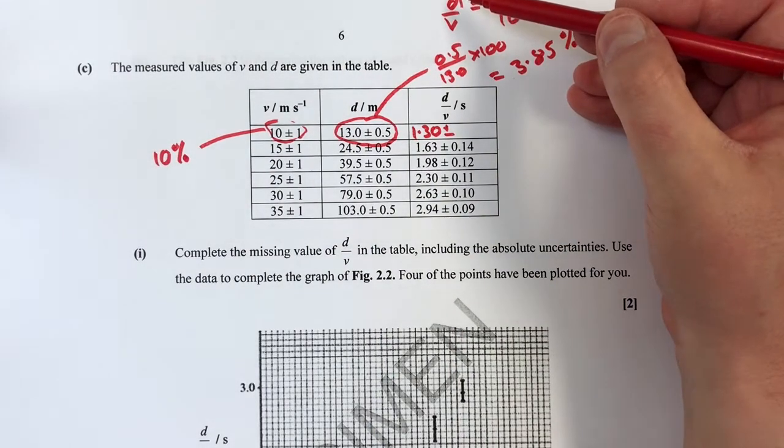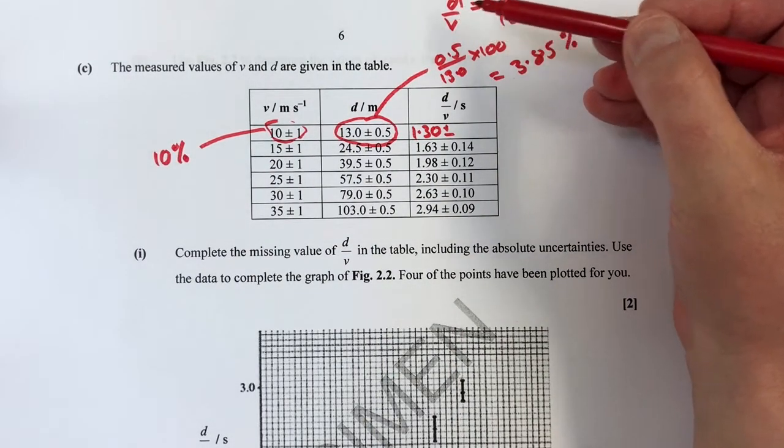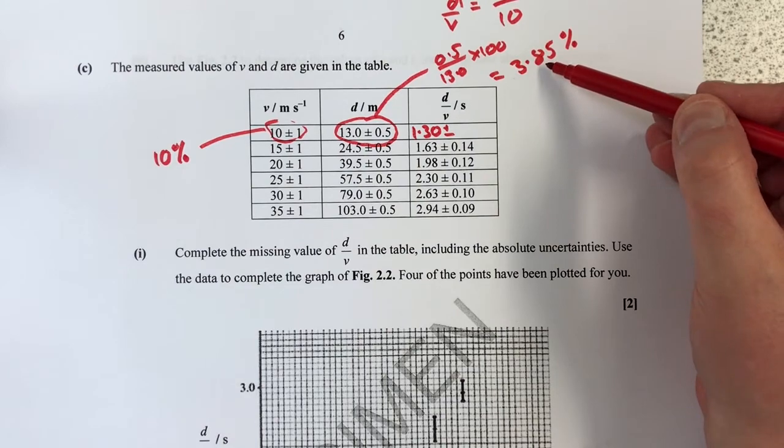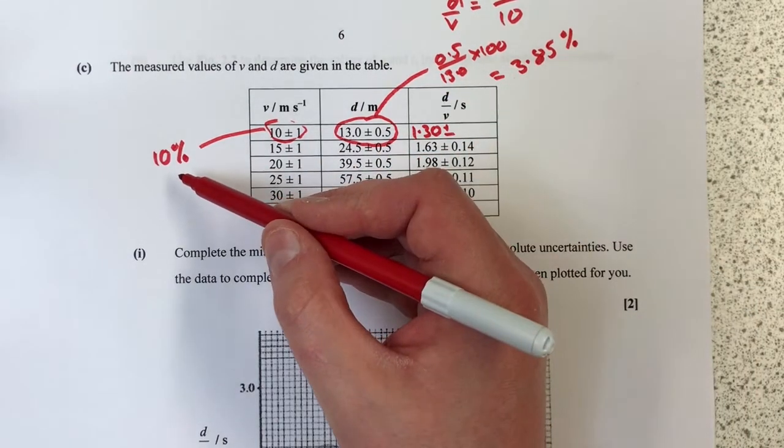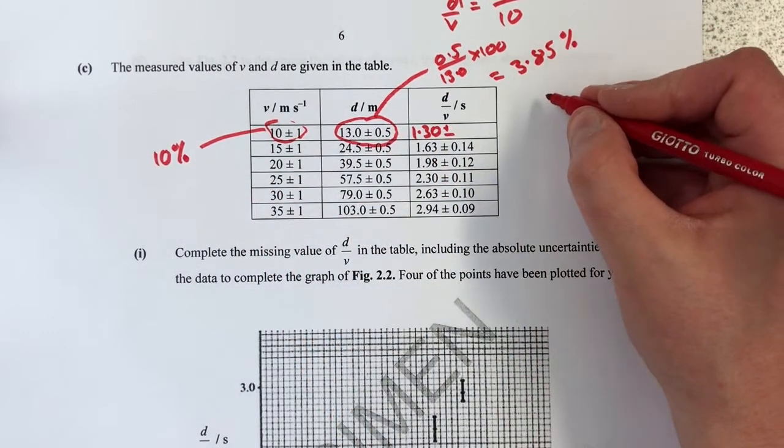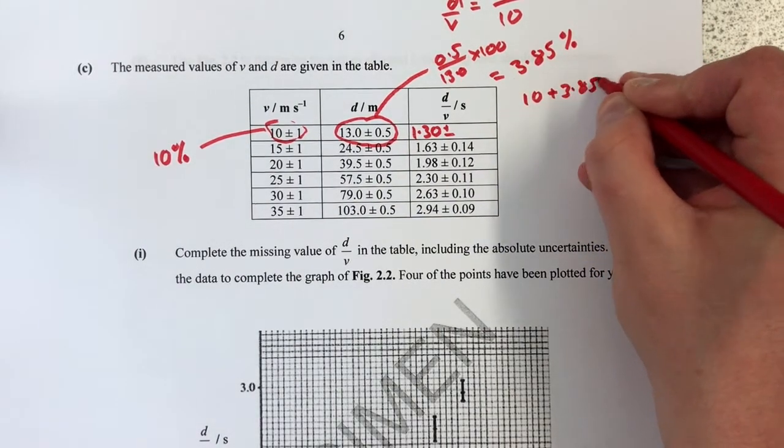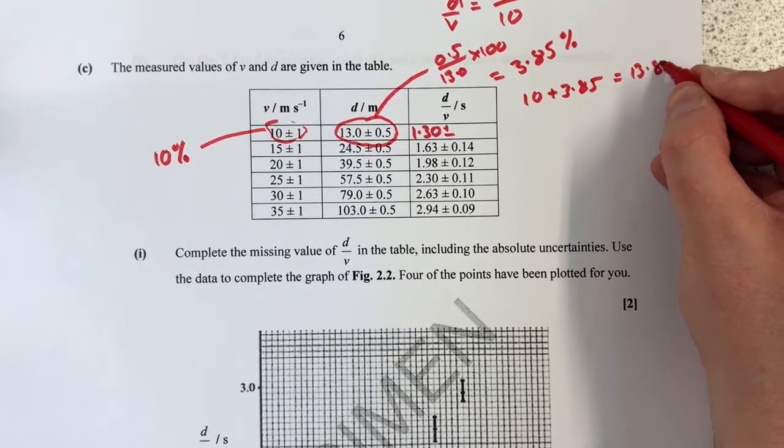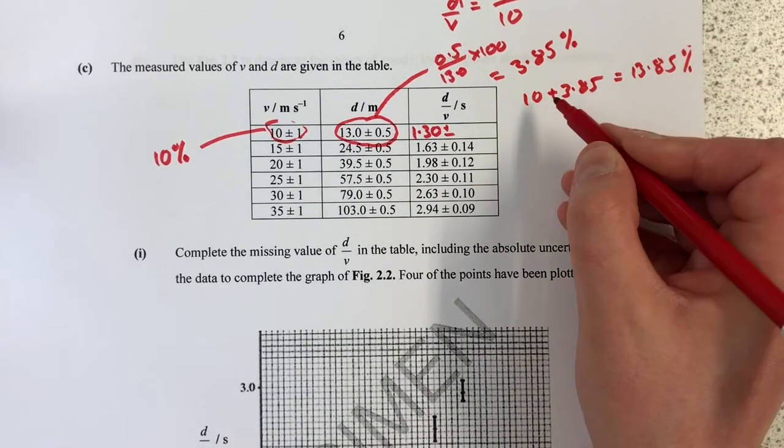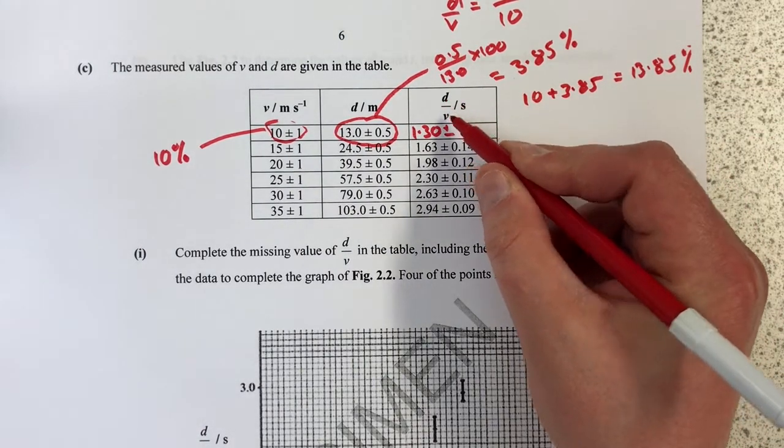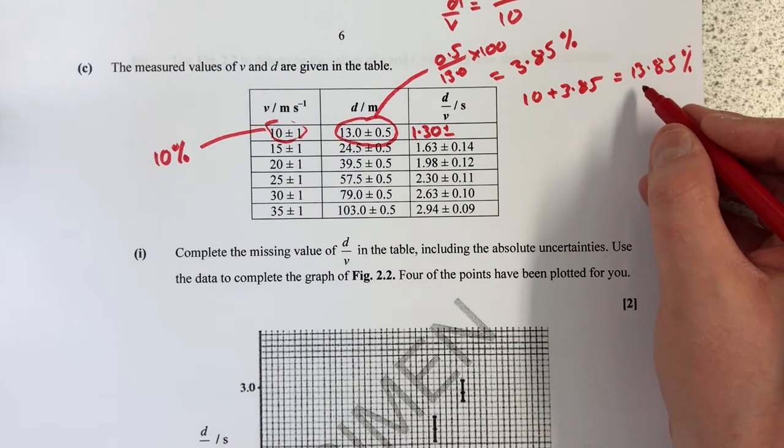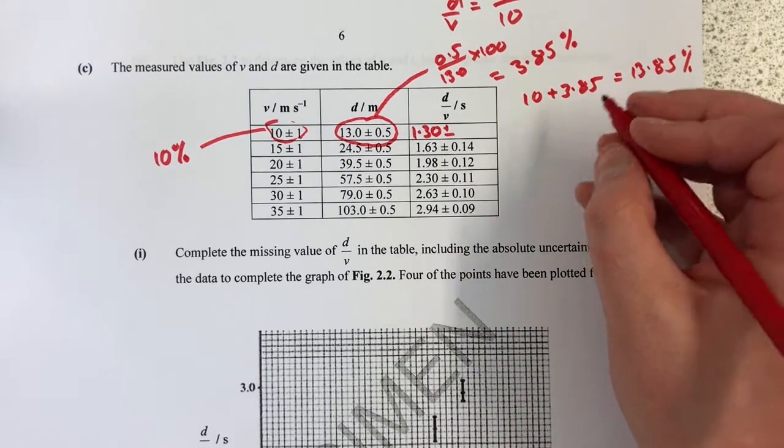So that means when I do distance divided by velocity, this percentage of uncertainty divided by this percentage of uncertainty, I have to add those percentage uncertainties to get a total of 10 plus 3.85 of 13.85% uncertainty in my d over v value.